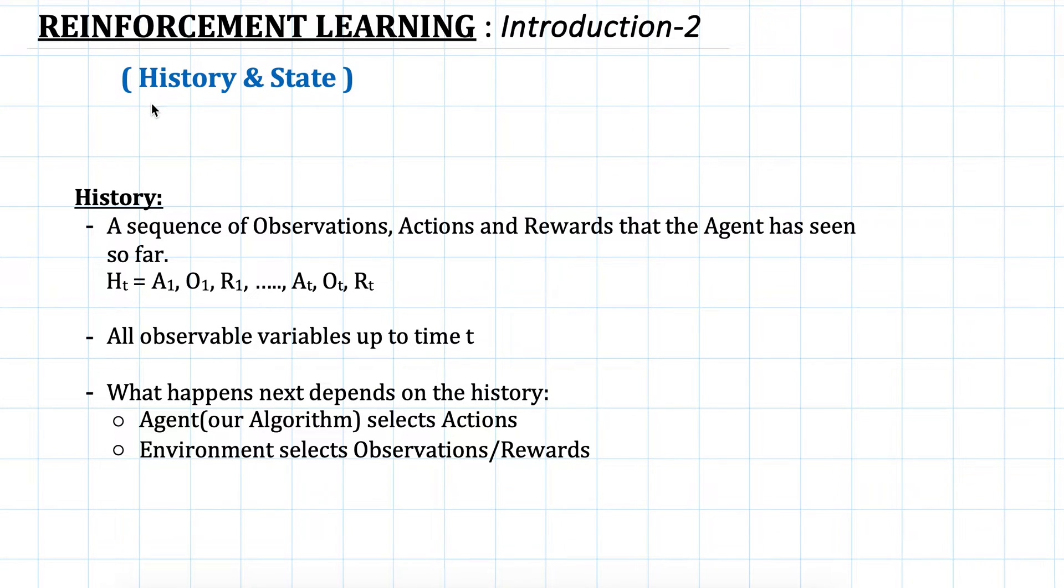The main theme of this lecture is to describe history and state. First, let's understand what is history. As I said in the last video, we have an agent and anything which is not part of the agent is an environment. This agent is nothing but the algorithm that we are trying to develop. Like we are creating an algorithm which will learn to play the game of chess, then this agent will be that algorithm which we will be improving by understanding the state of the environment.